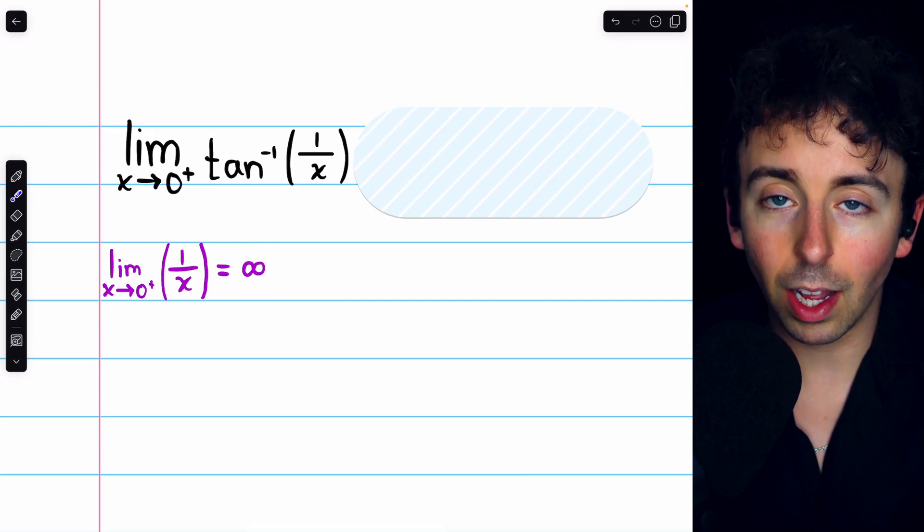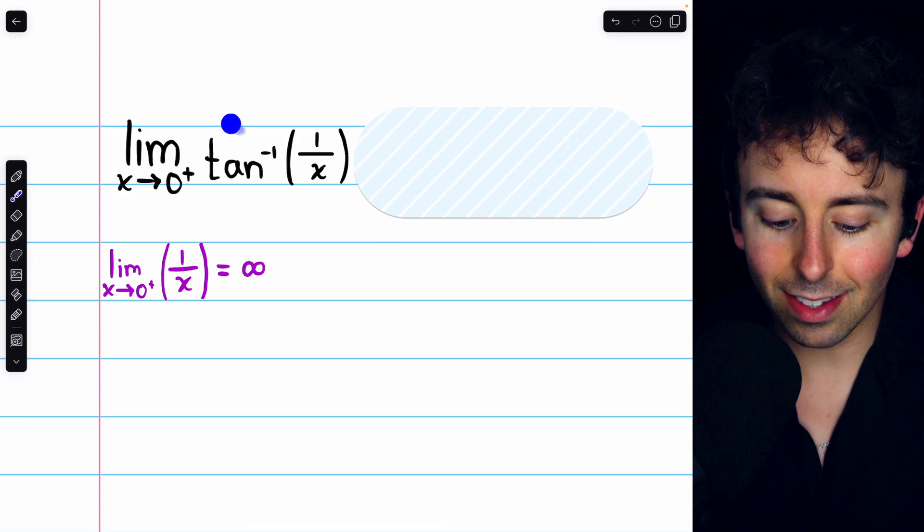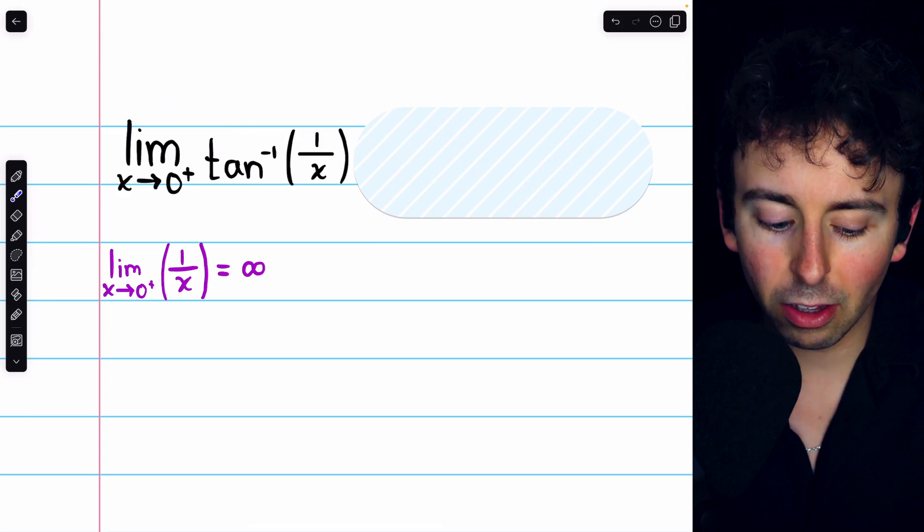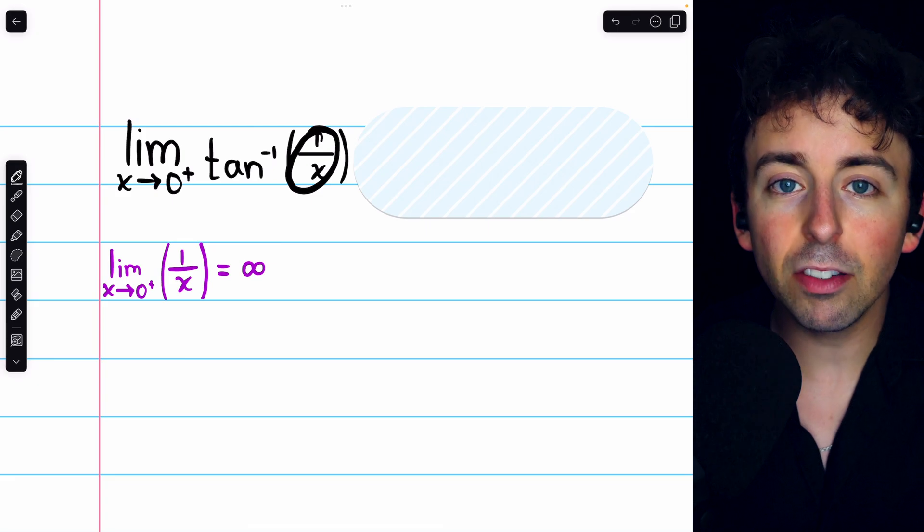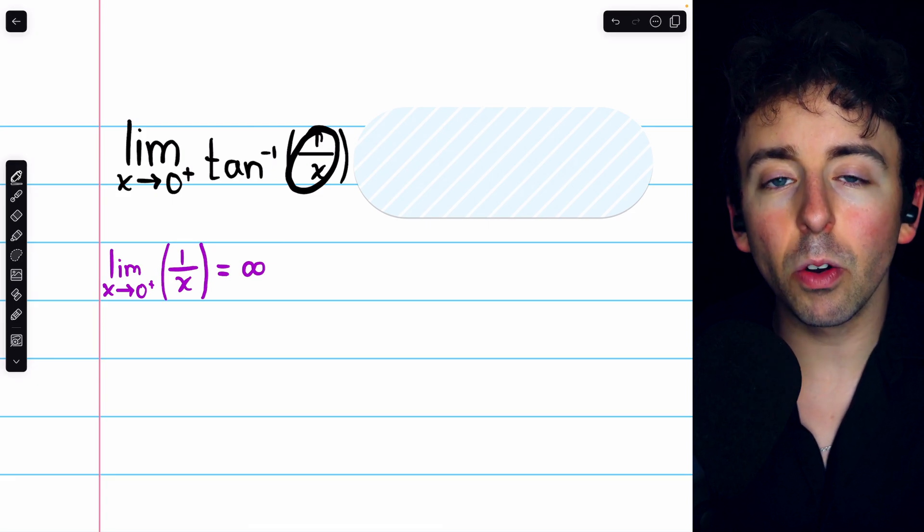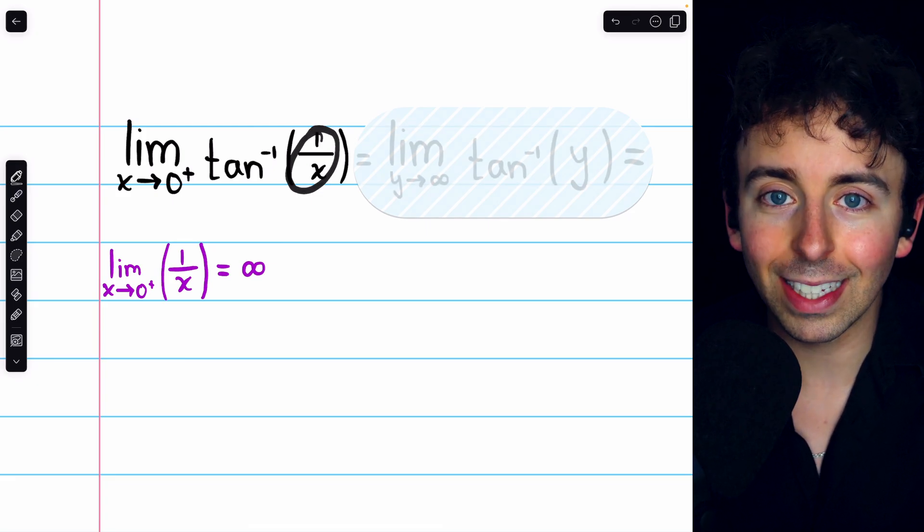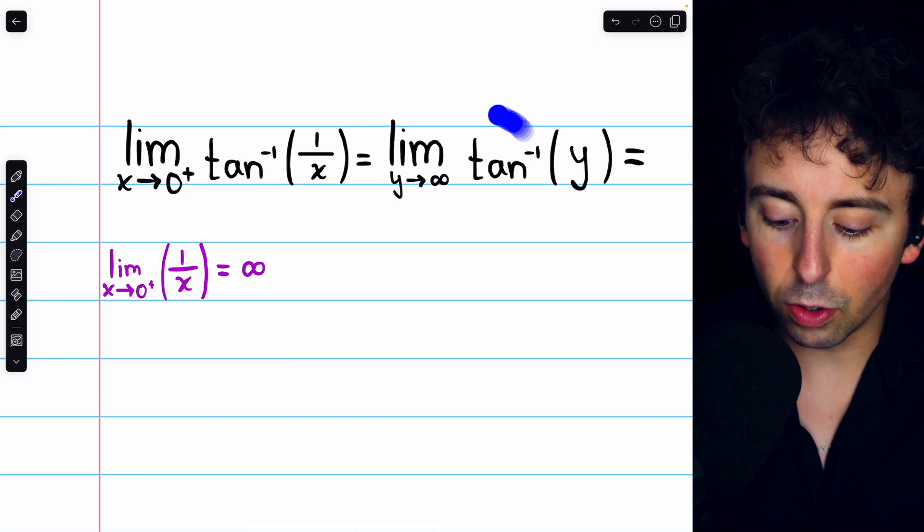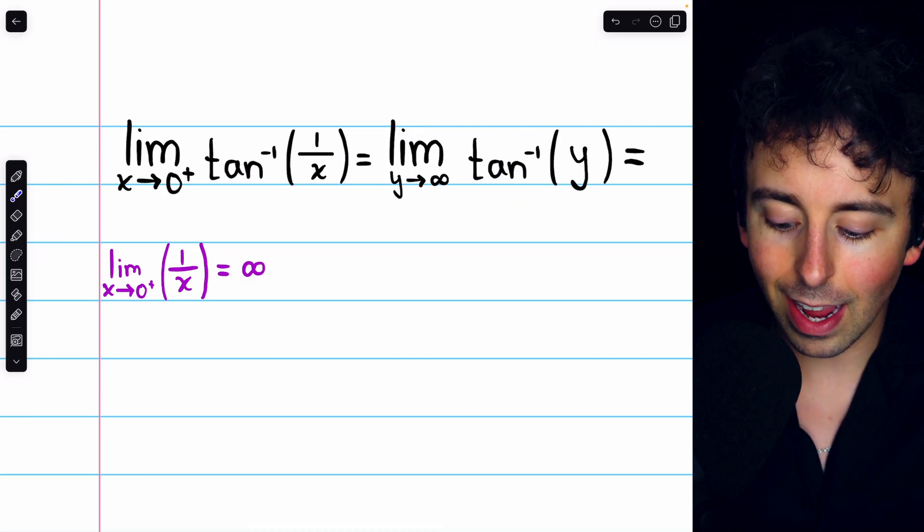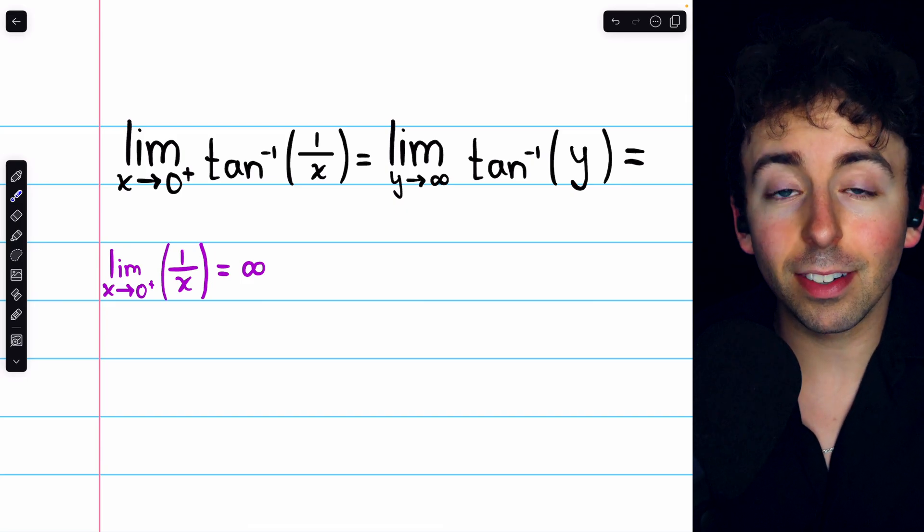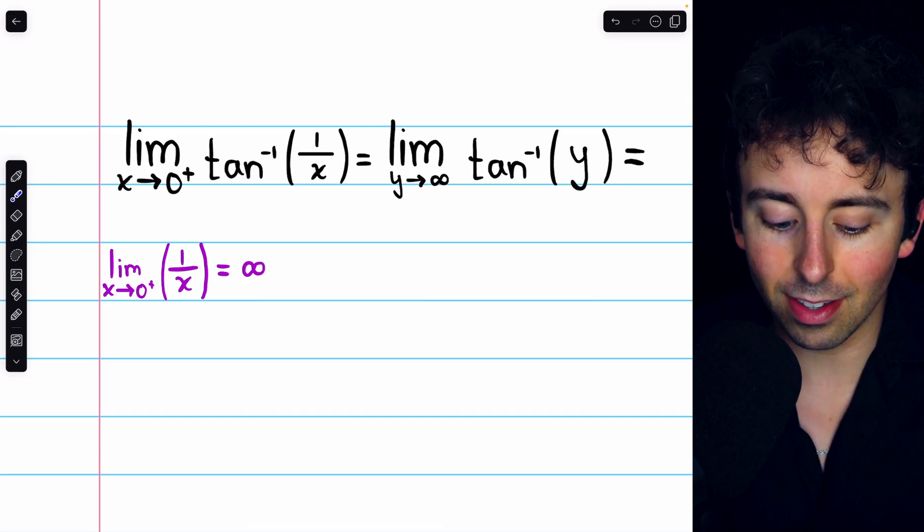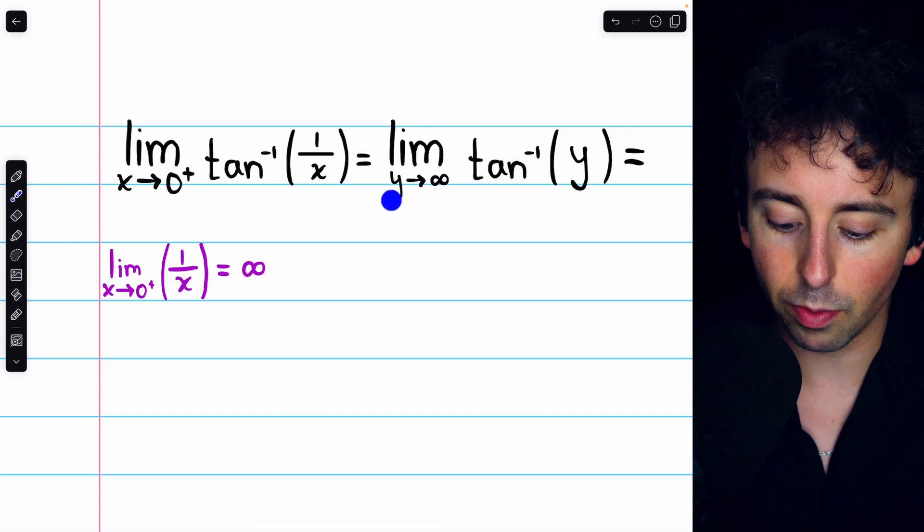So this limit goes to positive infinity, which means in the limit we're trying to evaluate, the inside of the arctan function is going to infinity. And so we can rewrite this limit accordingly. This limit is equal to the limit of arctan of y as y goes to positive infinity. This is just simplifying things. We know that this inside function is going to positive infinity, so we can rewrite it just like that.